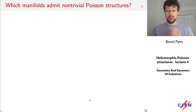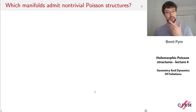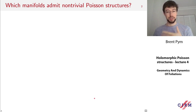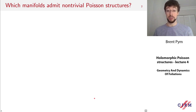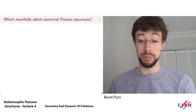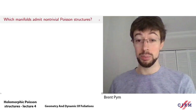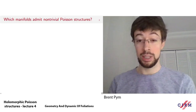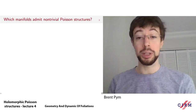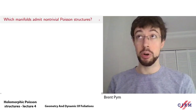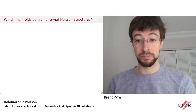To begin, I want to ask the basic question: which compact complex manifolds can admit non-trivial Poisson structures? We saw some examples in the previous lecture, but what can we say more generally?